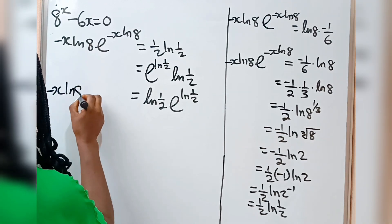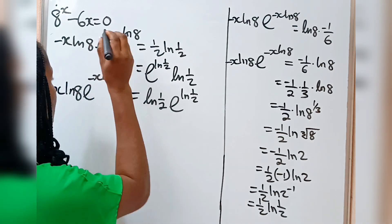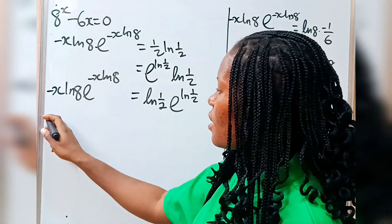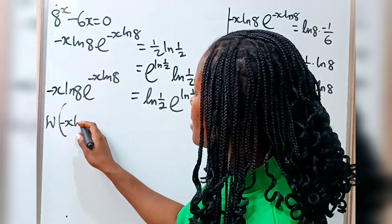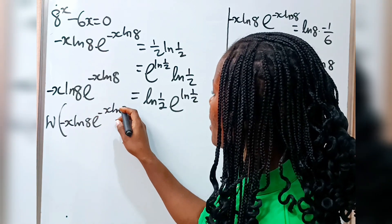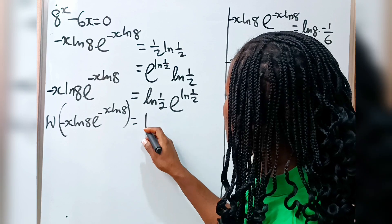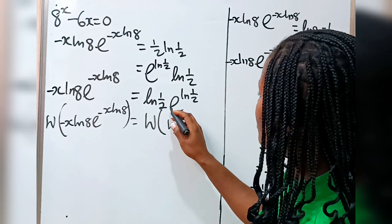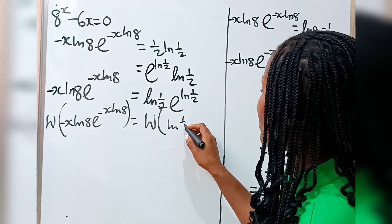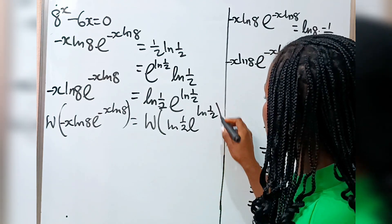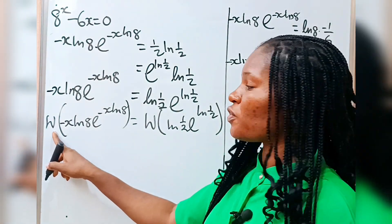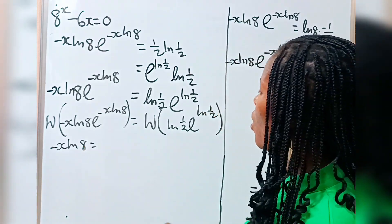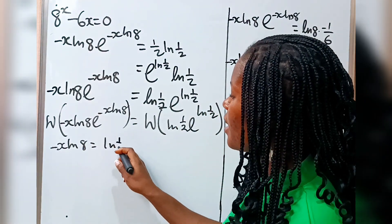So: minus x ln 8 times e to the power of minus x ln 8. If we introduce the Lambert W function, we are going to have the Lambert W of minus x ln 8 times e to the power of minus x ln 8 is equal to the Lambert W function of ln(1/2) times e to the power of ln(1/2). If I apply the Lambert W function, I get that minus x ln 8 is equal to ln(1/2). Recall that when you have the Lambert W function of a times e to the power of a, it is equal to a.